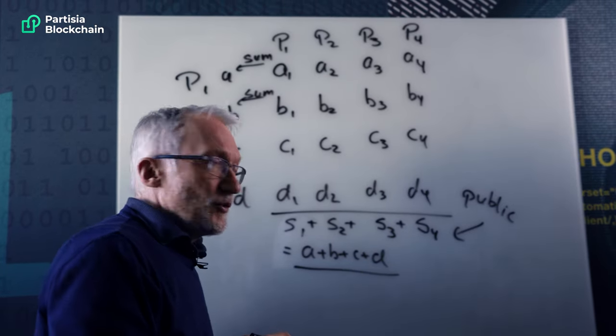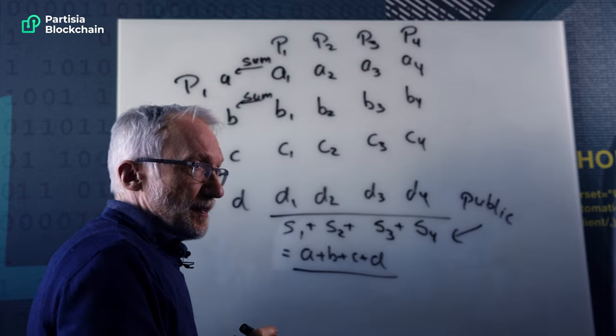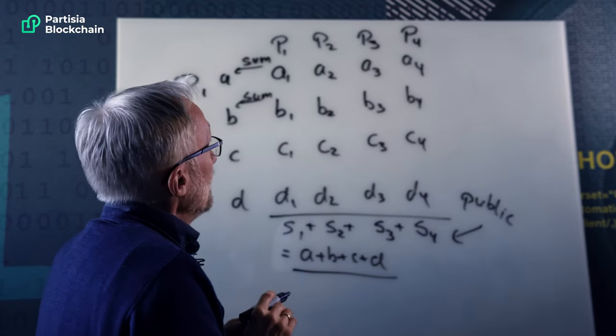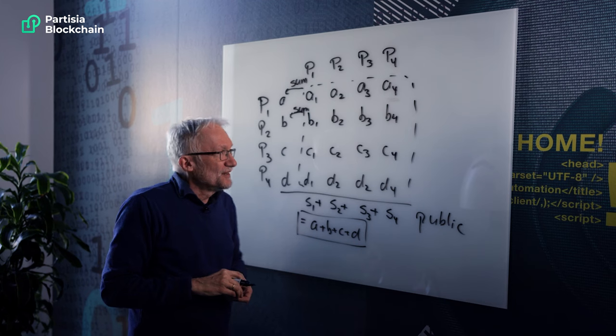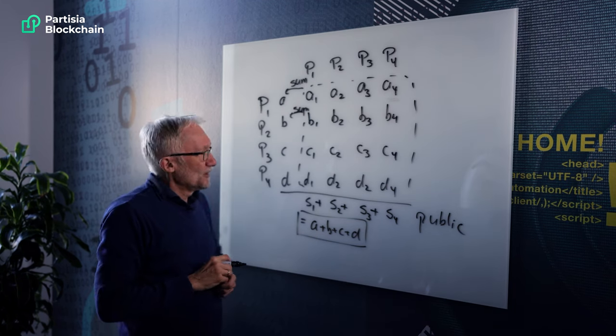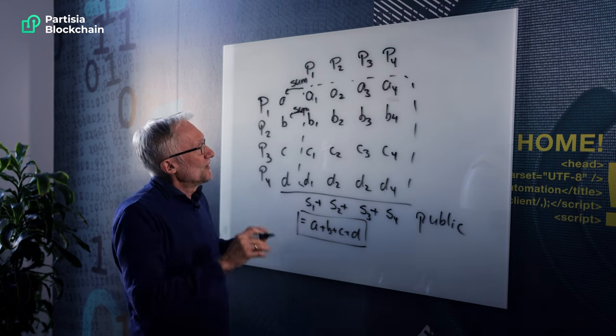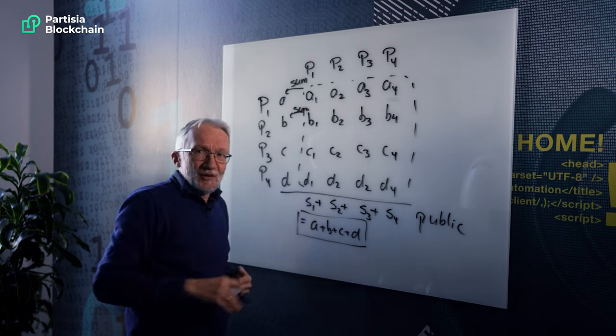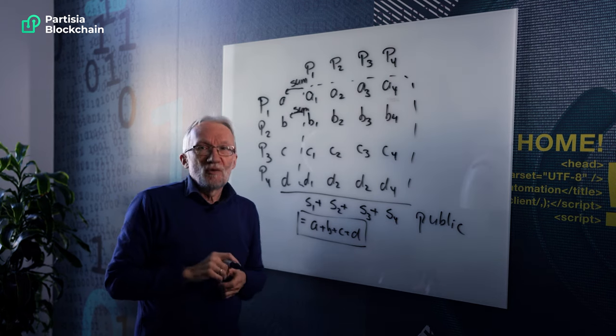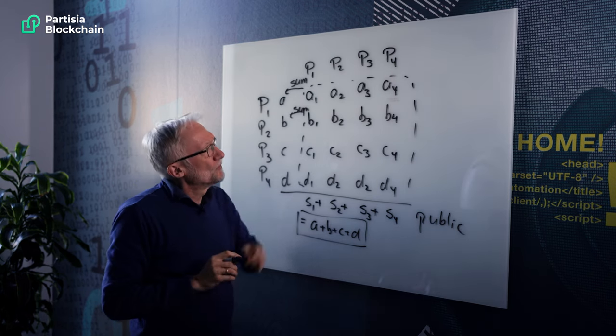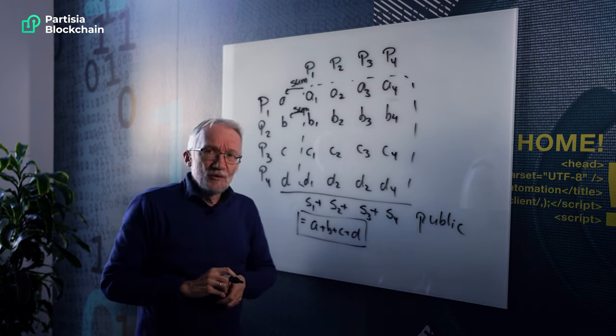So this gives us the sum of the salaries. Now we can all divide by four, of course, and get the average. But importantly, in the process, no one learned anything they should not. We just saw some random numbers in the process. This is very symptomatic of how multi-party computation works. We take the input data, we sort of spread them out randomly across all these guys. We do some local computation and we arrive at the result. So this should give you pretty much a feeling for how we do this kind of thing.